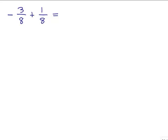In this problem, we're adding two fractions that have a common denominator, but we're adding a negative and a positive number. So we have to use the rules for adding positive and negative numbers and the rules for adding fractions with a common denominator. One thing to notice is when you see this minus sign out in front of the fraction bar, that means it's a negative number — it doesn't mean negative 3 over negative 8. It's a negative 3 over a positive 8. If you put an extra negative sign in the denominator, that would make it positive 3 eighths, not negative 3 eighths.